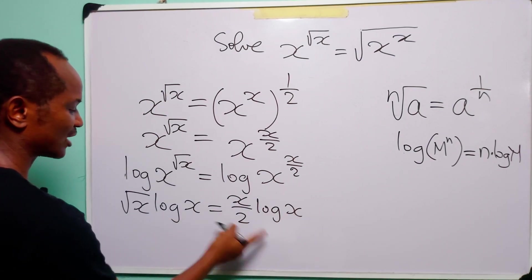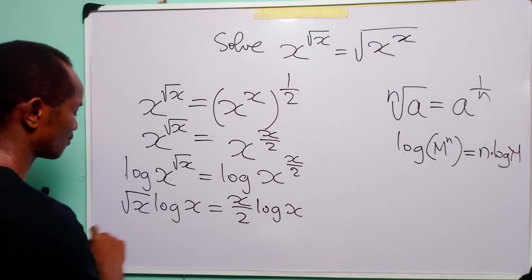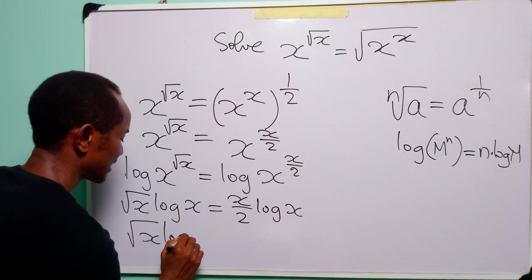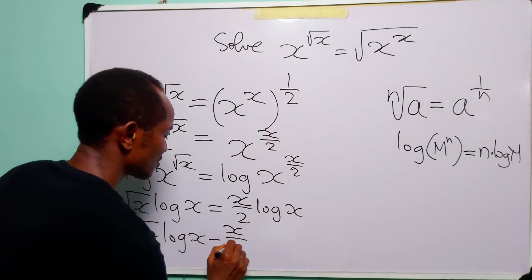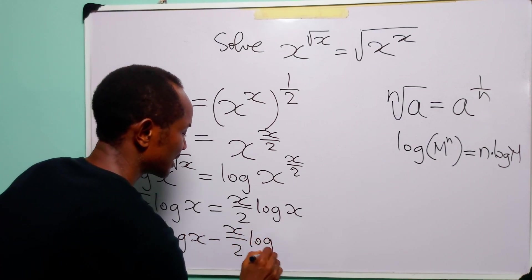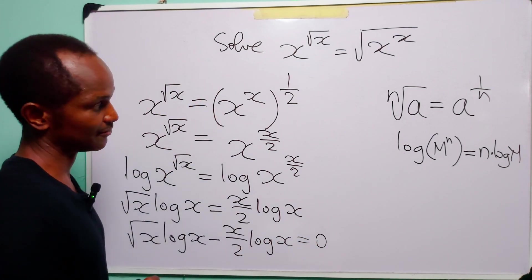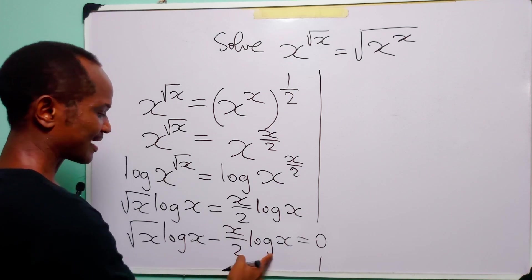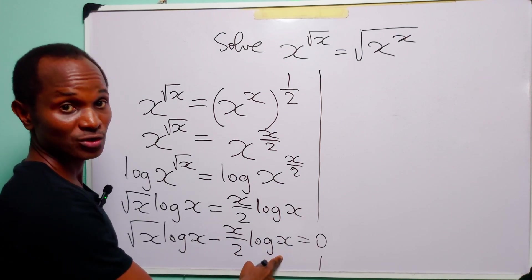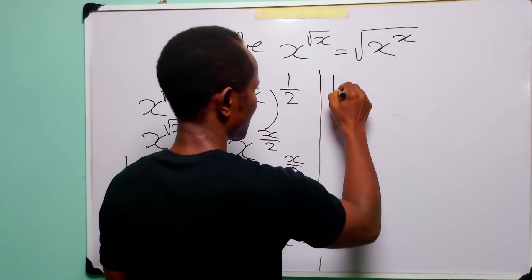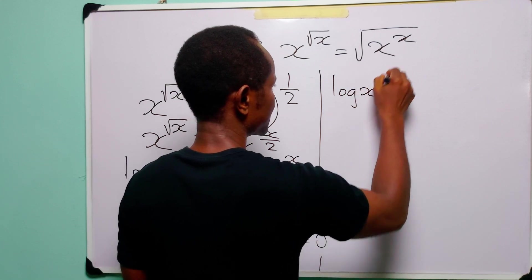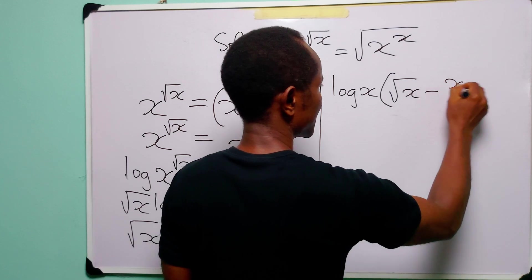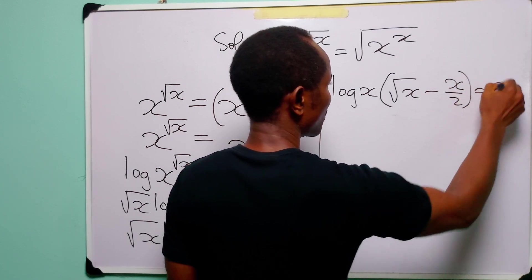Let us bring everything over to the left hand side. When we do that we have square root of x times log x minus x over 2 times log x is equal to 0. We can factorize log x out of this equation, giving us log x multiplied by square root of x minus x over 2 is equal to 0.